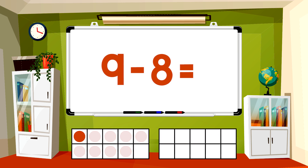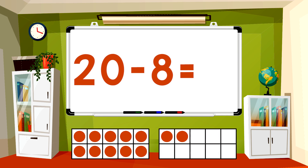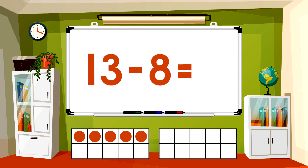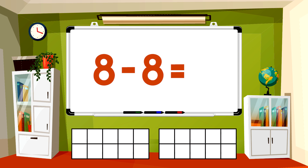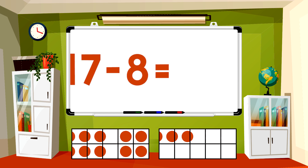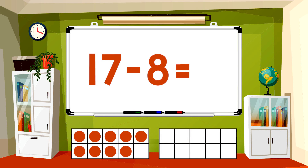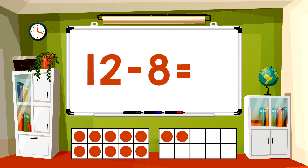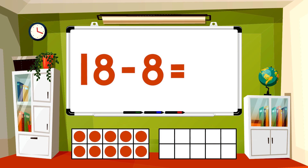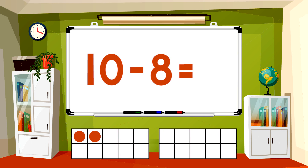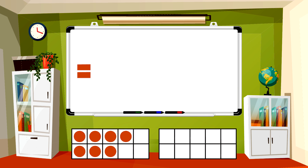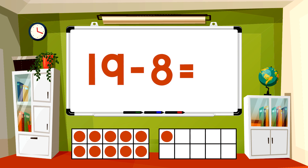9 minus 8 equals 1. 20 minus 8 equals 12. 13 minus 8 equals... 5. 8 minus 8 equals 0. 17 minus 8 equals 9. 12 minus 8 equals 4. 18 minus 8 equals 10. 10 minus 8 equals 2. 19 minus 8 equals 11.